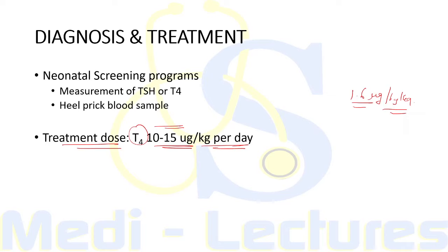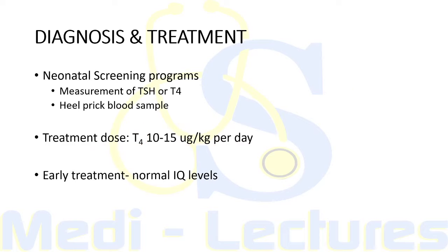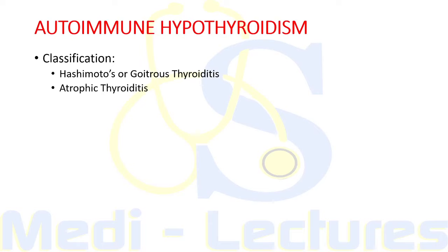T4 requirements are greater during the first year of life. Regular TSH monitoring is required and the dose is adjusted accordingly. Early treatment with levothyroxine results in normal IQ levels in later life.